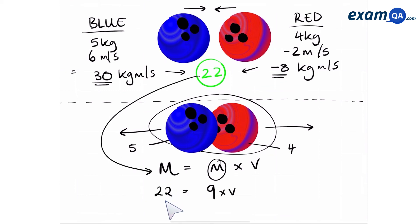And finally, all we have to do now is make velocity the subject. So we're going to do 22 divided by 9, which gives us 2.4 meters per second to one decimal place. We know that it's moving 2.4 meters per second, and now because it's a positive number, that means it's going to be moving towards the right.